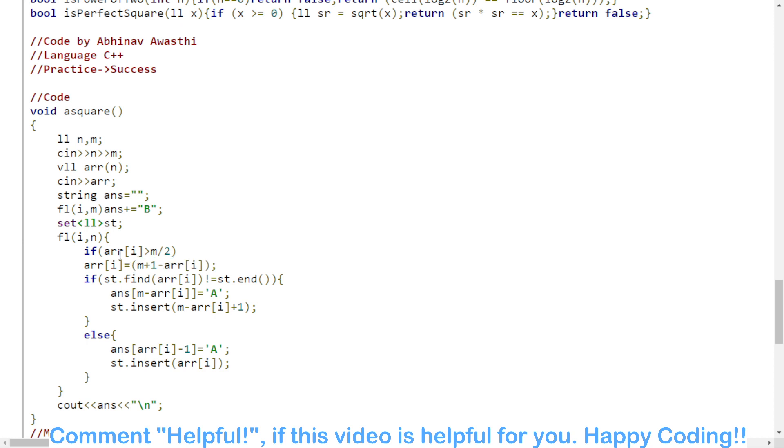We are first checking if arr[i] is greater than m by 2. In that case, the least element will be m plus one minus arr[i]. If that element is already changed to A, if that character is already replaced, in that case we will replace its character from the back side. Otherwise, we will just replace it and insert it.